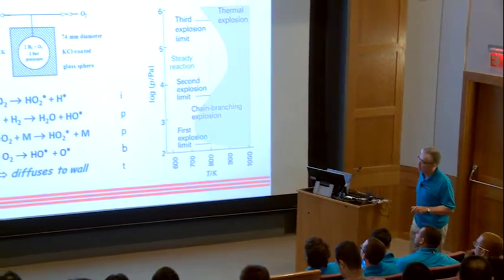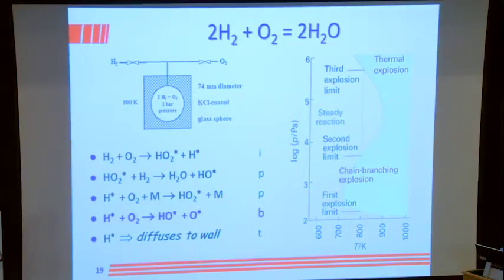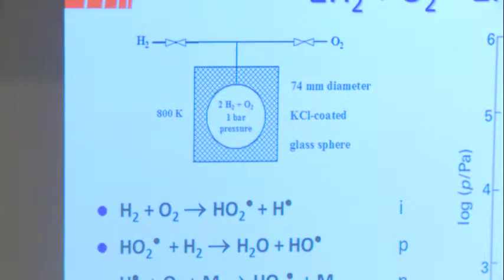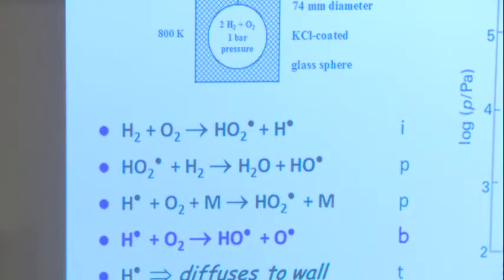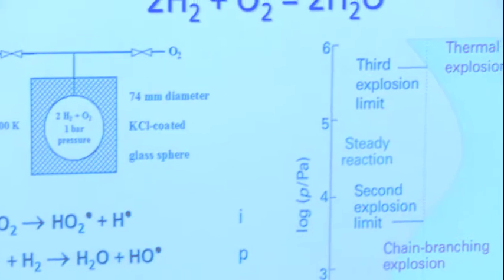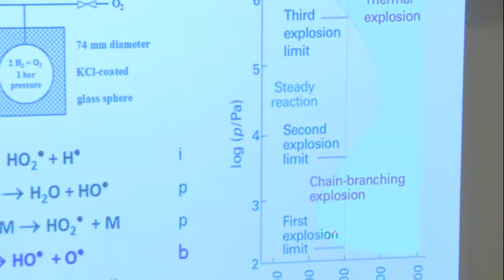Most of you have seen the explosion limits for the hydrogen-oxygen system. If we have hydrogen and oxygen in a closed vessel — say at 800 Kelvin and one bar pressure — hydrogen reacts with oxygen to give peroxy radical and H atom, then the hydroperoxy radical reacts with hydrogen to give water and OH. Or the hydrogen atom can recombine with O2 plus a third body to give hydroperoxy radical, or react with O2 to give O plus OH. The H atom can also diffuse to the wall. So we have an initiation step, two propagation steps, a branching step, and a termination step. What happens between propagation, branching, and termination determines where you are in the explosion limit curve.